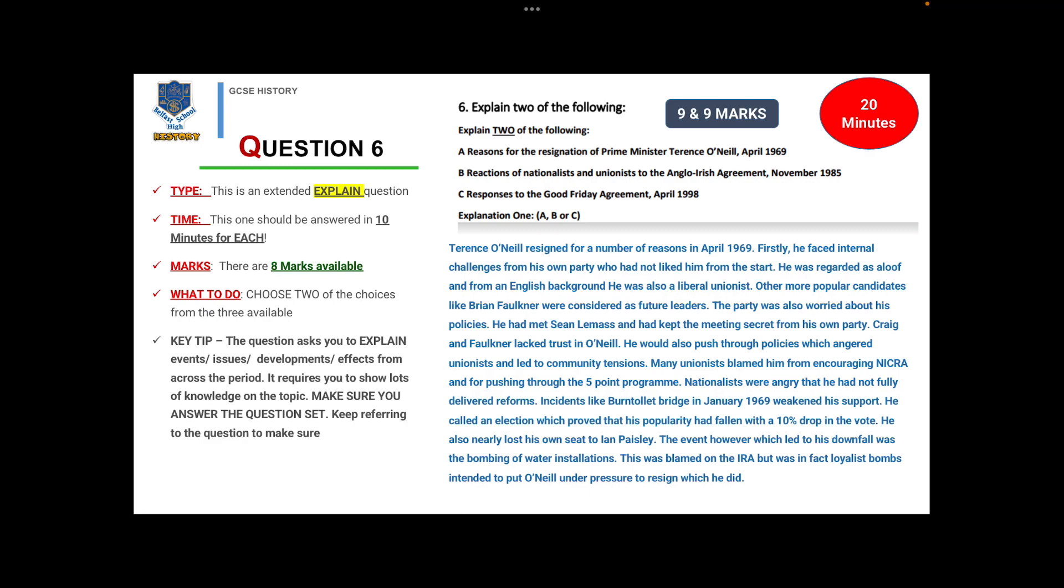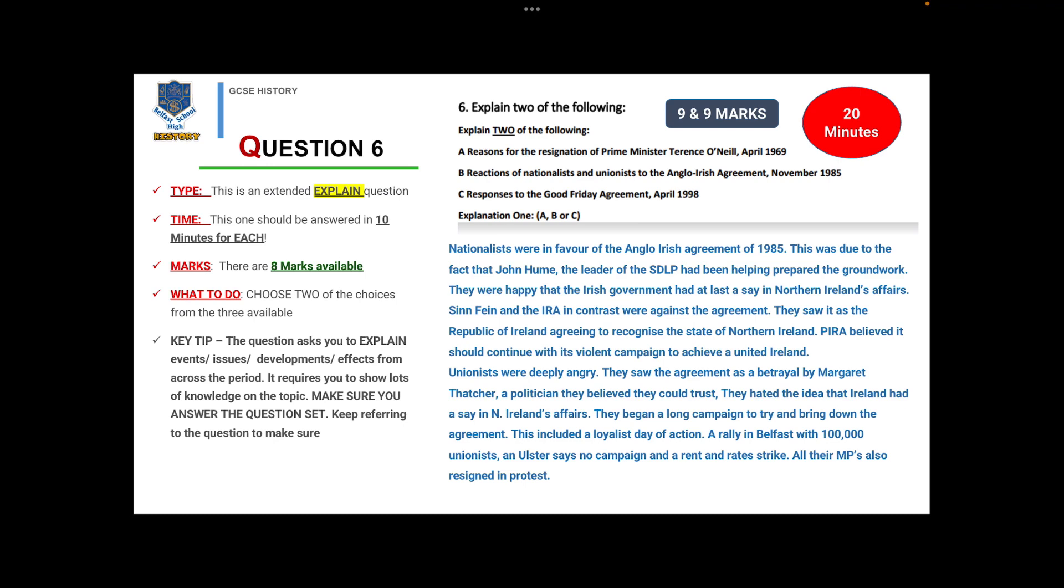If it was the reactions of nationalists and unionists to the Anglo-Irish Agreement: Nationalists were in favor of the Anglo-Irish Agreement of 1985. John Hume, leader of the SDLP, had been helping prepare the groundwork. They were happy the Irish government at last had a say in Northern Ireland's affairs. Sinn Féin and the IRA, in contrast, were against the agreement. They saw it as the Republic of Ireland agreeing to recognize the state of Northern Ireland, and the Provisional IRA believed it should continue its violent campaign. Unionists were deeply angry. They saw the agreement as a betrayal by Margaret Thatcher, a politician they believed they could trust. They hated the idea that Ireland had a say in Northern Ireland's affairs. They began a long campaign to bring down the agreement: the Loyalist Day of Action, a rally in Belfast of 100,000 unionists, the Ulster Says No campaign, rent and rate strikes, and all their MPs resigned in protest.